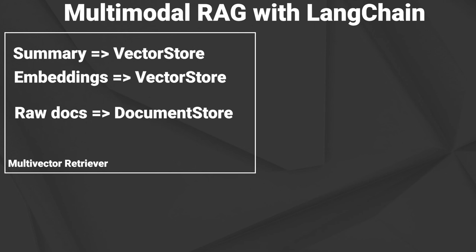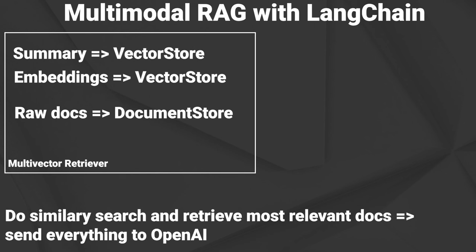For the images it's only the summary, because currently there's no way to process images and text into a single request to OpenAI. Then we make a standard request and retrieve the relevant documents from the multi-vector retriever through a similarity search and send everything to the LLM. So that's the theory — let's now have a look at how this works in practice.